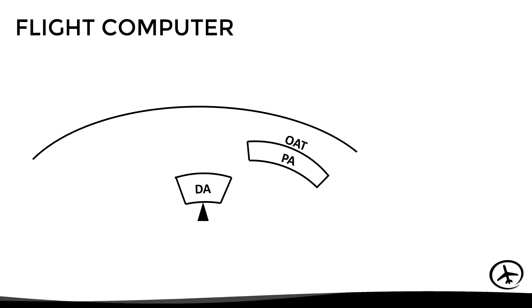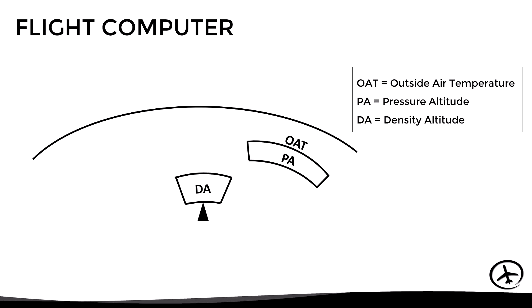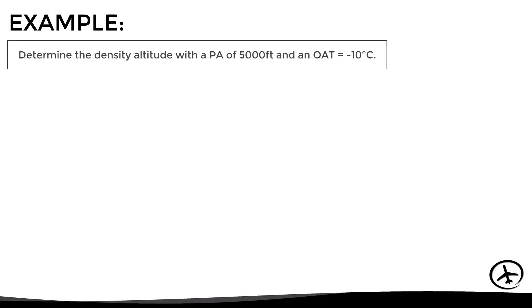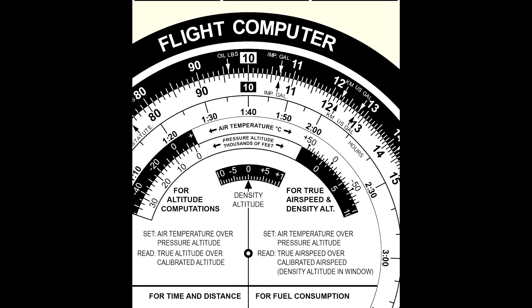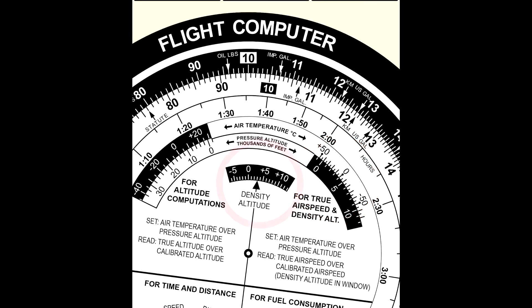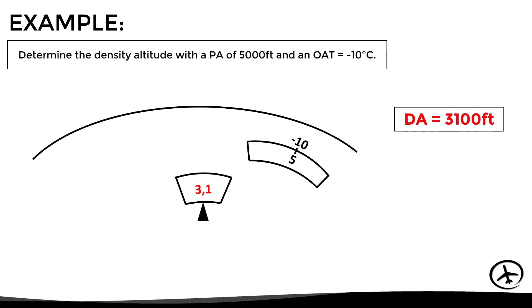Let's begin with the flight computer, using the inner scales — specifically the small center scale and the upper right scale. To calculate density altitude we need the air temperature and pressure altitude. The first step is to align the pressure altitude with the corresponding air temperature in the upper right scale, then read the resulting density altitude in the center scale. For example, with a pressure altitude of 5,000 feet and air temperature of minus 10 degrees, we align those values and read 3.1, corresponding to a density altitude of 3,100 feet.